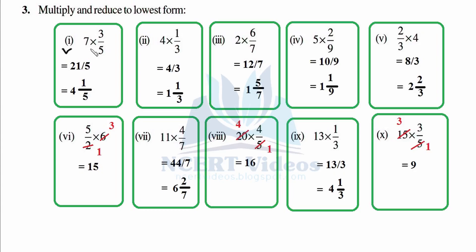Second: four into one is four, three into one is three — four over three. Three ones are three, so one whole part with remainder one over three. Third: six times two is twelve and seven times one is seven — twelve over seven. Seven ones are seven and remainder is twelve minus seven = five, so five over seven.